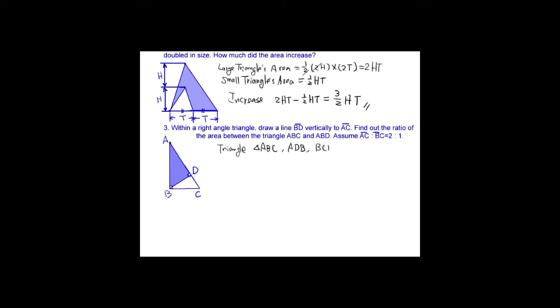Triangle ABC, ADB, BCD are all right triangles. Right angle triangles are similar. They're all similar because they share the same angles.